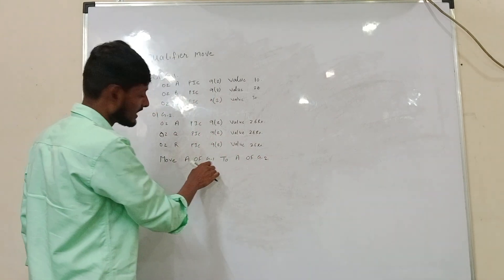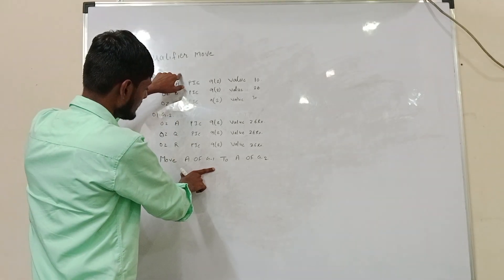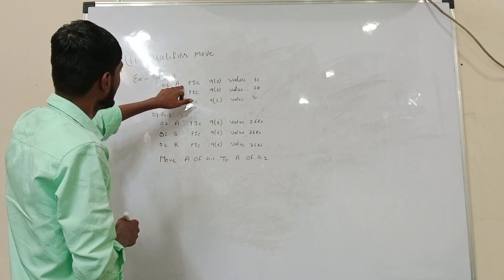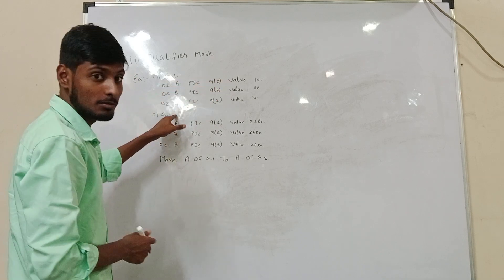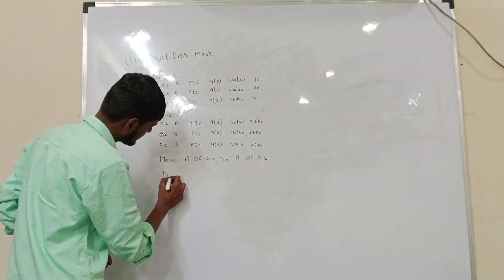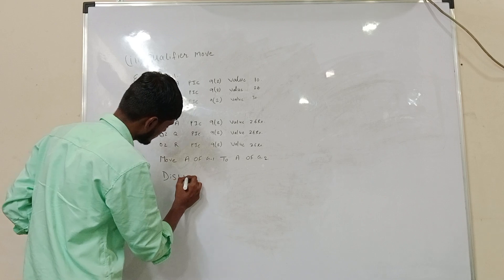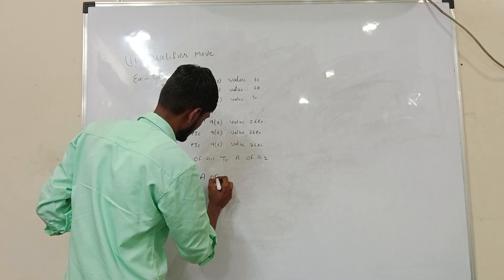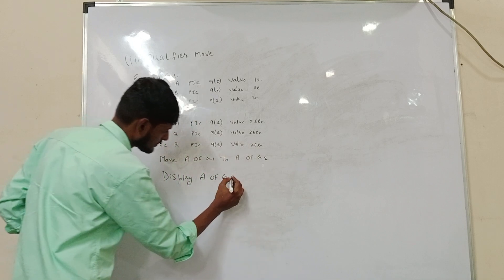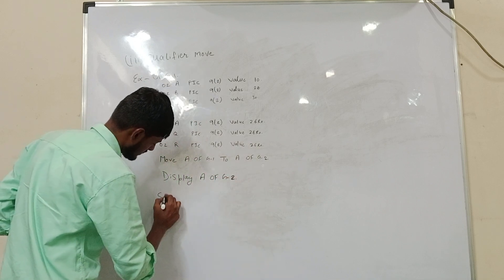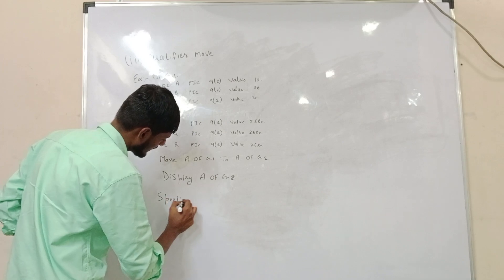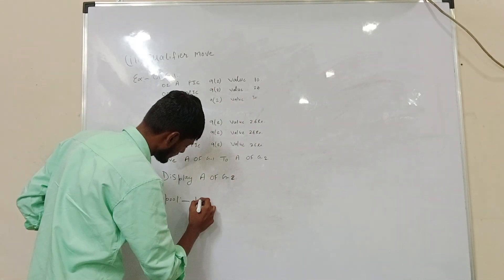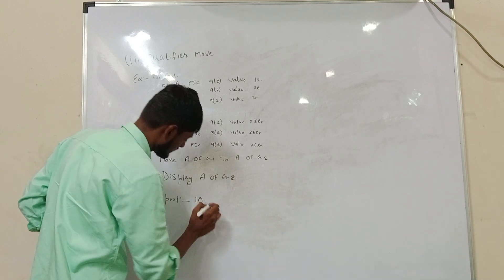Here, MOVE A OF Z1 to A OF Z2 means we copy the value of A in group Z1 to A in group Z2. If we display A OF Z2, then we will get in our spool area the value of A, which is 10.